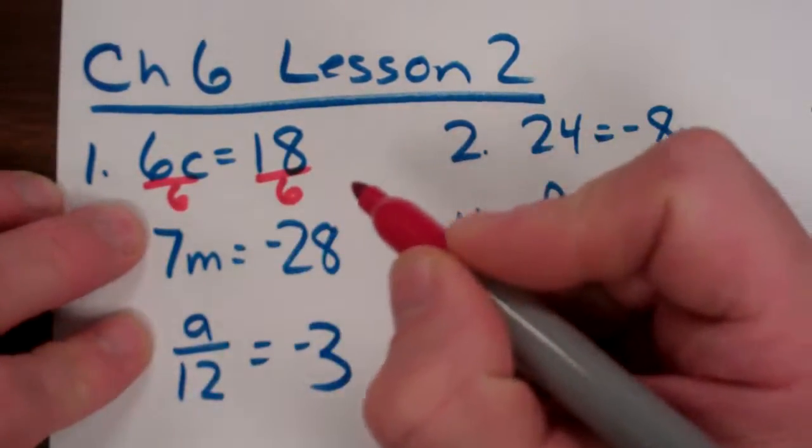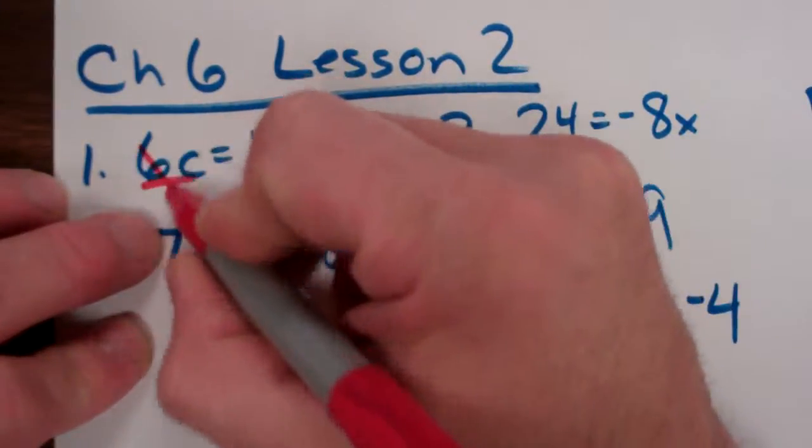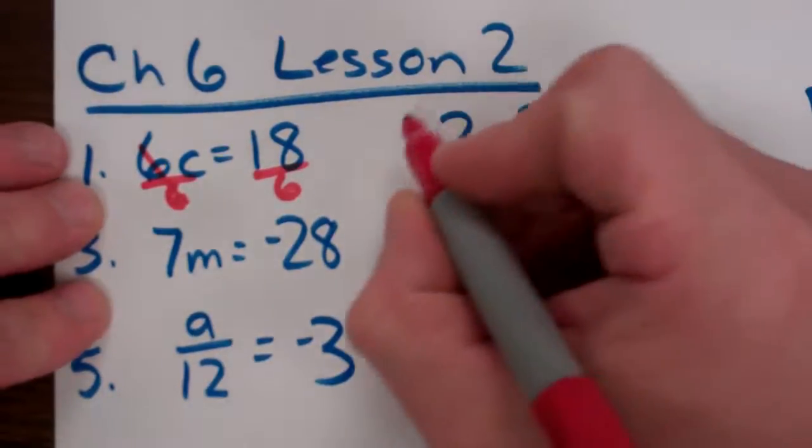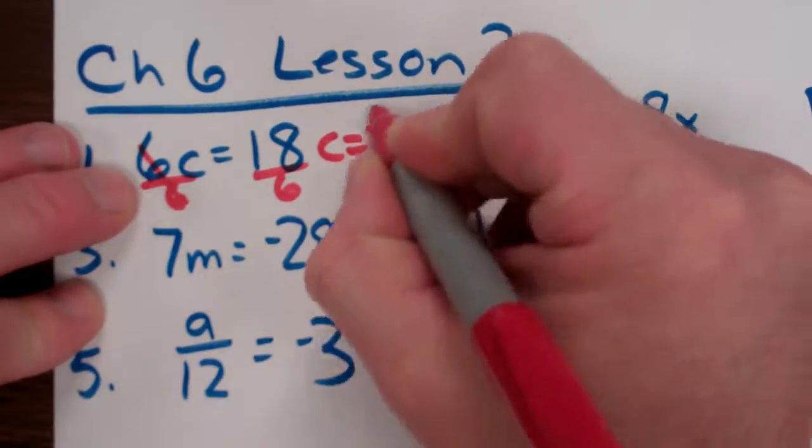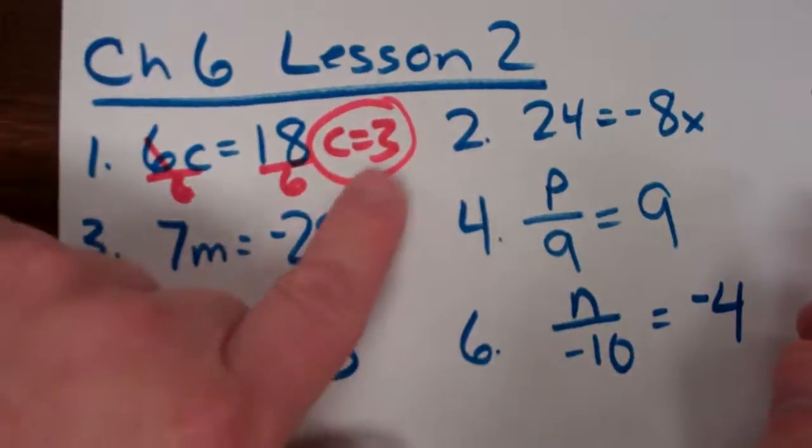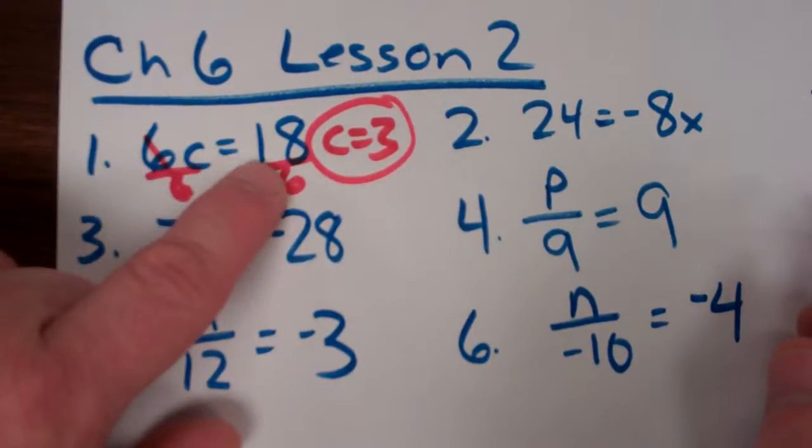So once again, I do it to both sides, and I get these cancel out. They become 1. 1c is its identity. So c equals 3. And once again, you can plug it back in. 6 times 3 is 18.